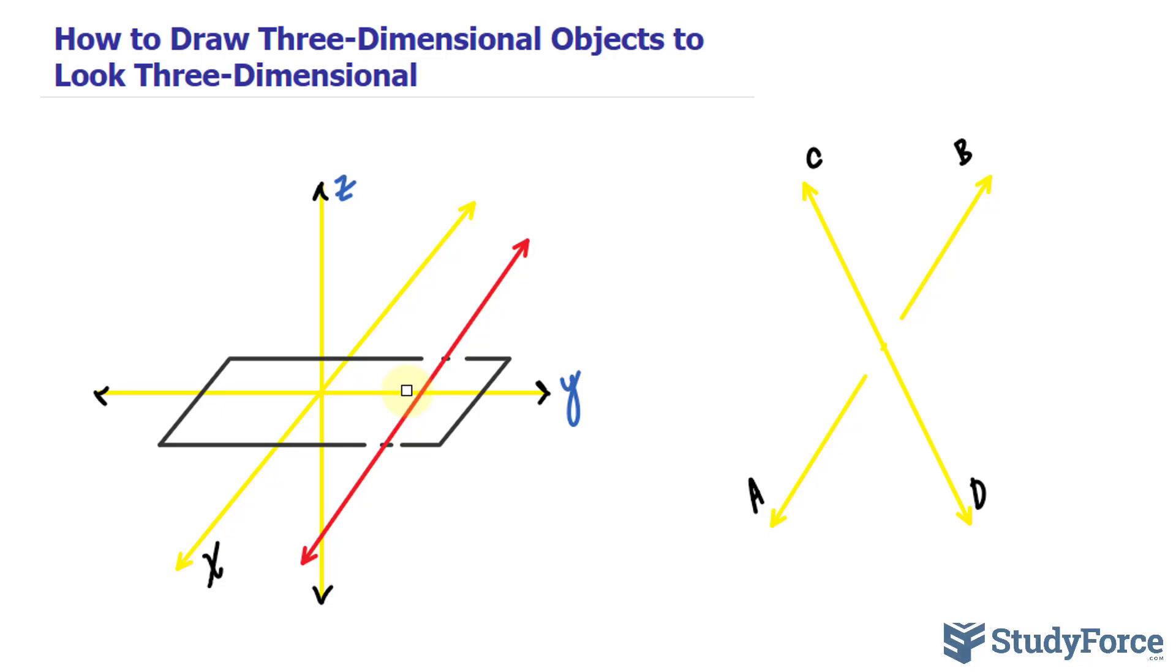And if you want it to be touching the plane where it's actually sitting on it, that's all you do. Now you know that this line is sitting directly on the plane.